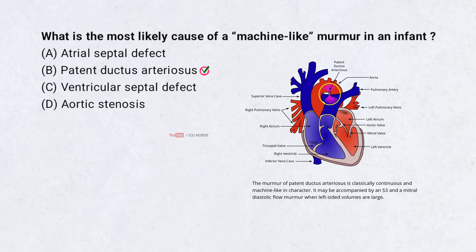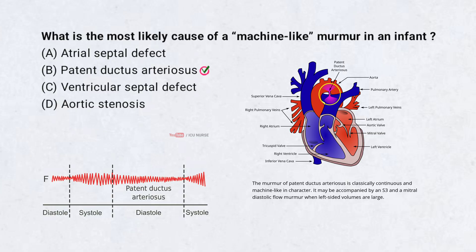Patent ductus arteriosus typically causes a continuous machine-like murmur. It results from a persistent connection between the aorta and pulmonary artery after birth. It is common in premature infants. Many cases close spontaneously, but some need medication or surgery.